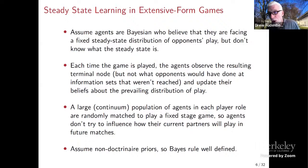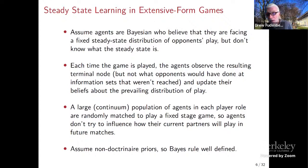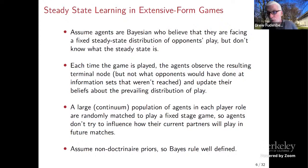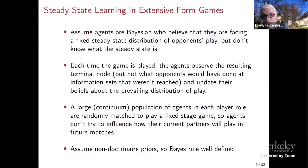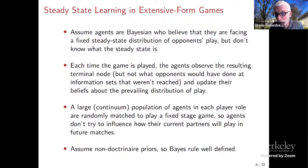The different papers I'm going to tell you about share a lot of features in common, with some small details that differ from paper to paper. In all these papers, agents are Bayesian and believe they're facing a fixed steady-state distribution of opponents' play, but they don't know what that steady state is. They play an extensive game repeatedly; each time it's played, they observe the terminal node of the game, which tells them all the moves that were made, but not what their opponents would have done at information sets that weren't reached. Players are Bayesian and update their beliefs from this data.